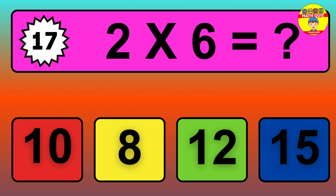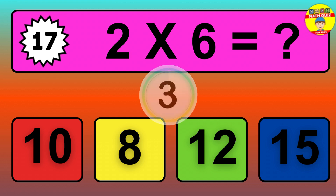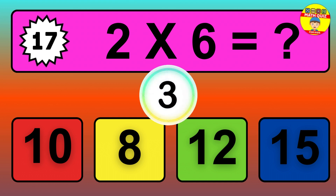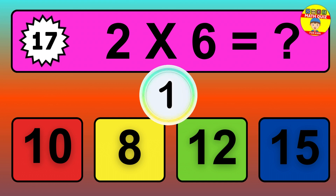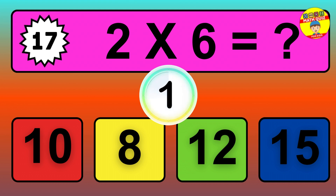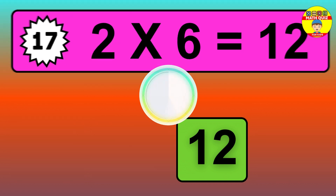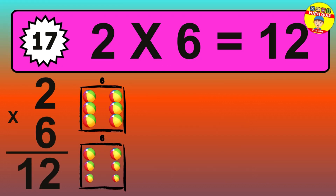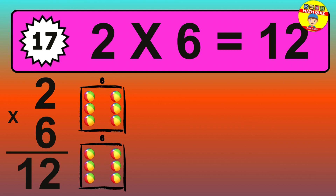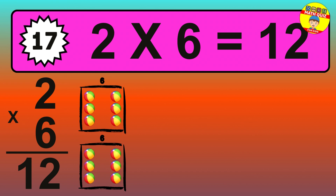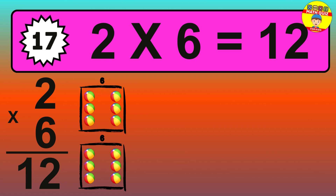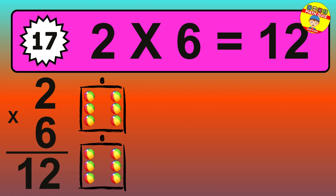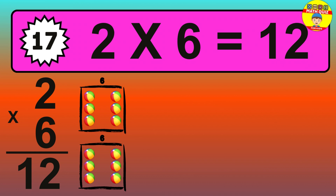Question 17. 2 times 6 equals what? The answer is 2 times 6 is 12. To calculate, we have 2 groups with 6 balls each one. So, how many balls do we have? 12 balls.